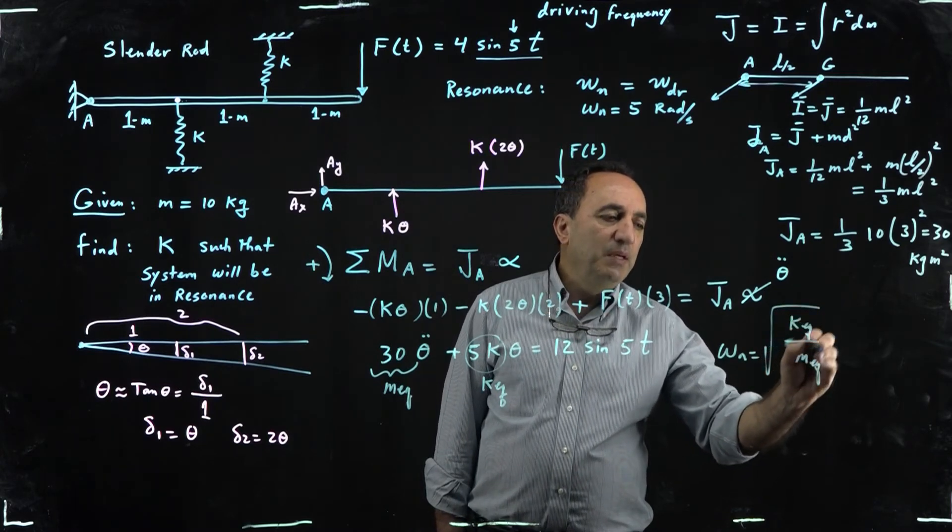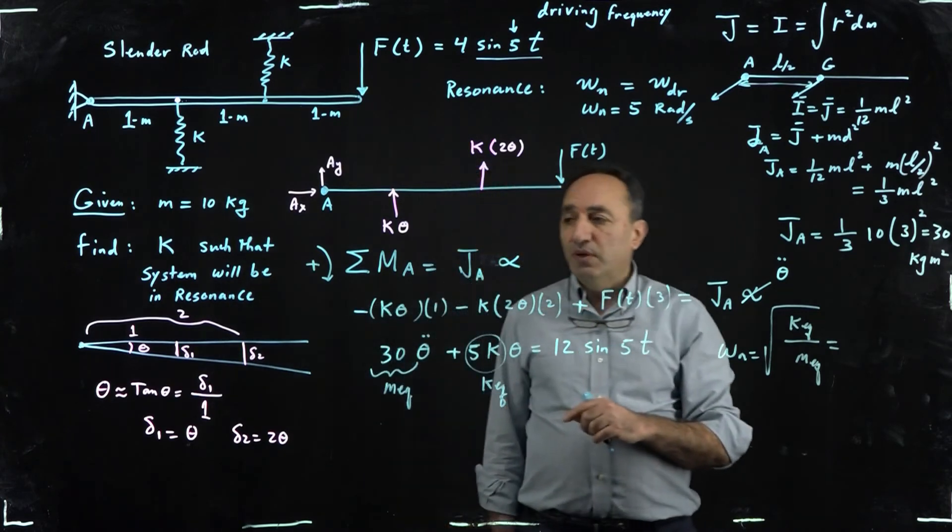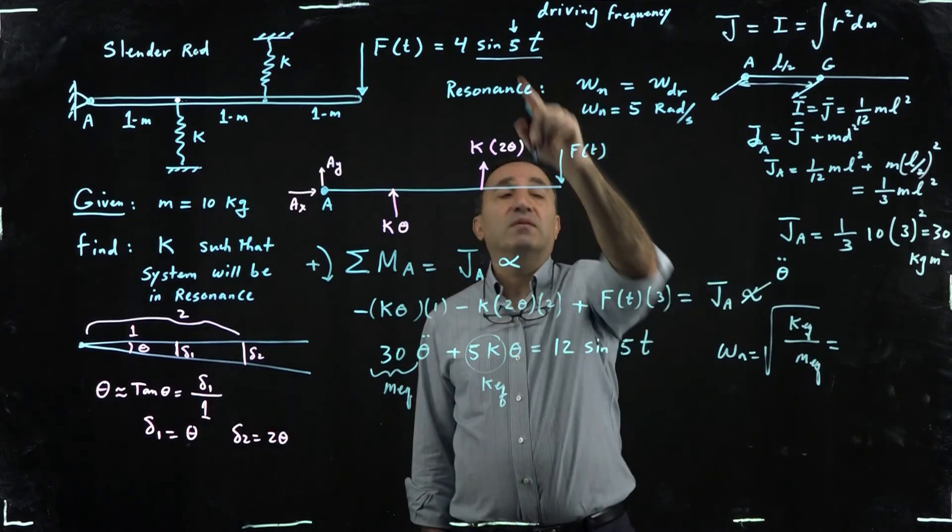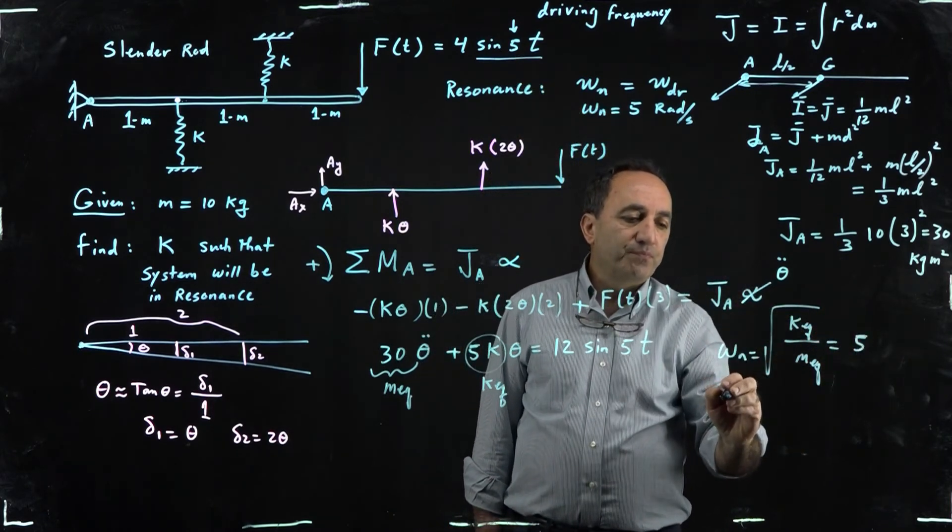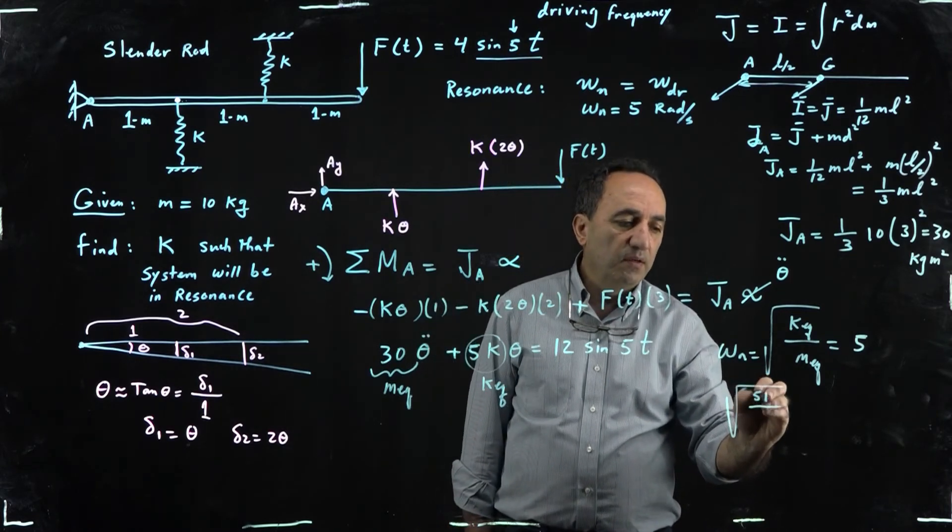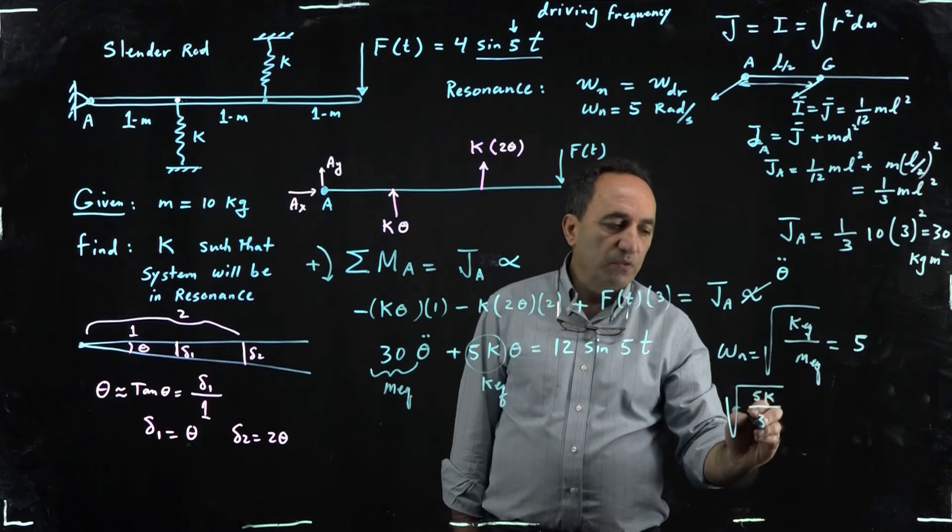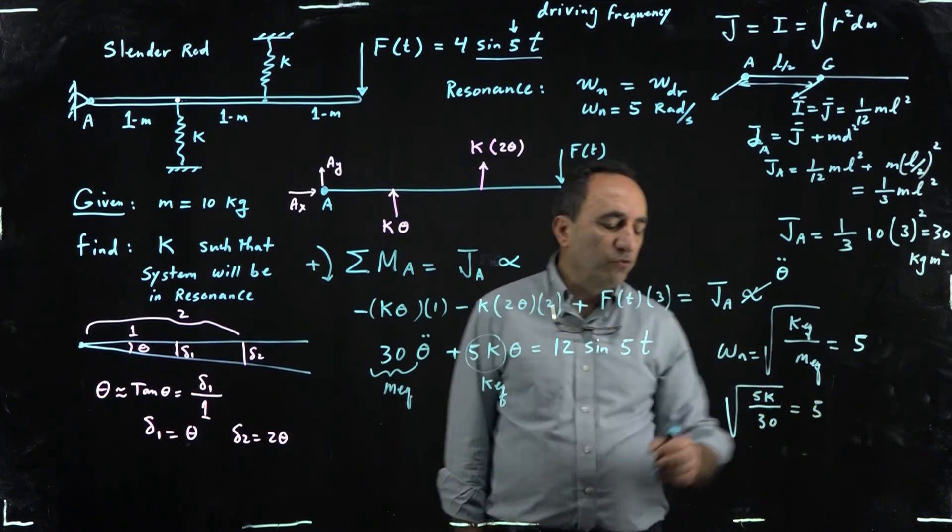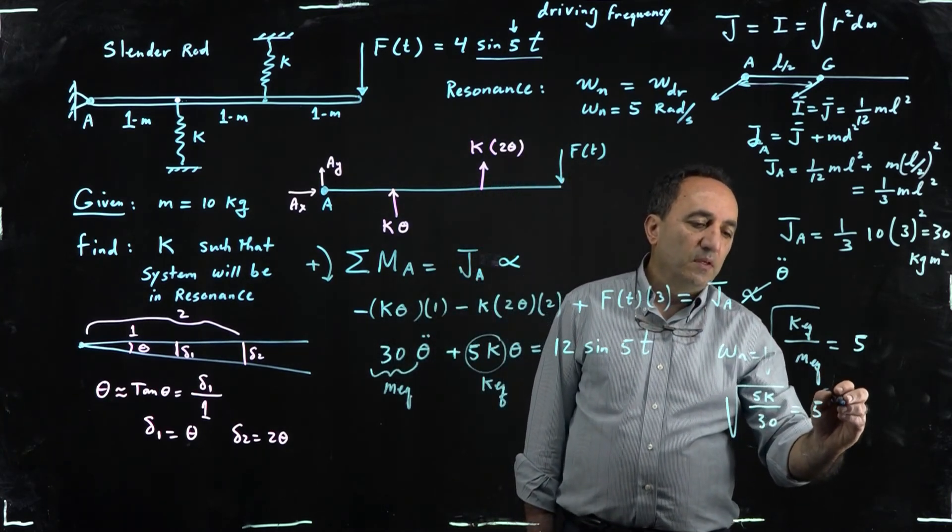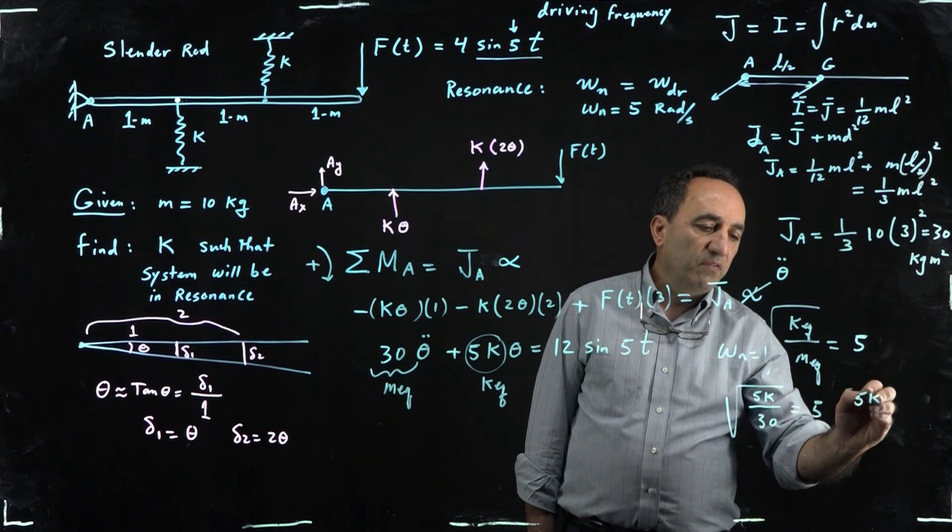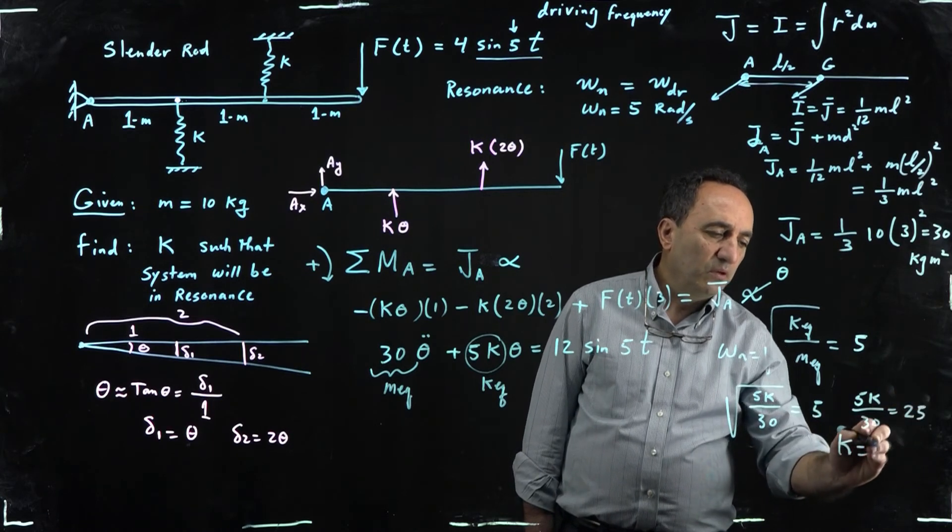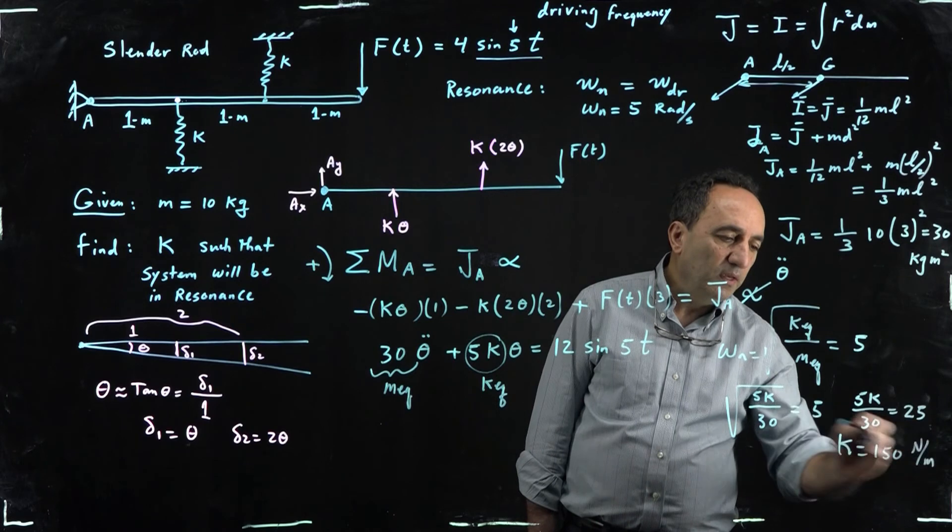And remember, natural frequency is what? Is square root of K equivalent over mass equivalent. And because we want this to be reaching resonance, that has to be equal to 5, the same as the driving frequency. So if you go ahead and put equivalent K, which is 5K, over equivalent mass, which is 30, and say equal to 5, and then square both sides, right, what do we end up getting? We end up getting, let's see, we square both sides, we get a 5K over 30 equals 25. So actually K becomes 150 Newton per meter.